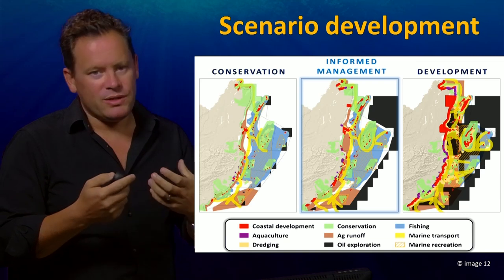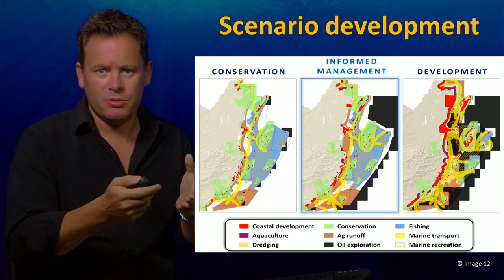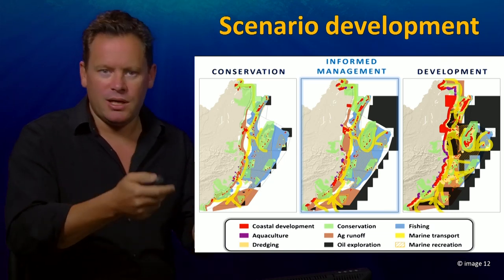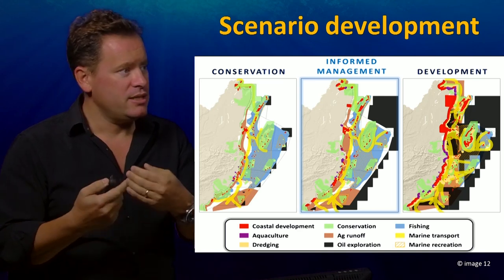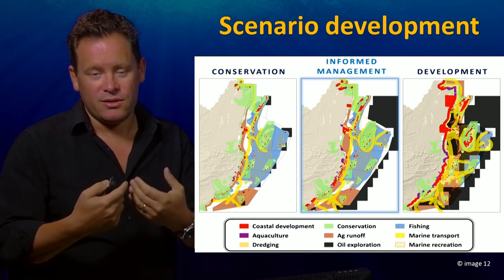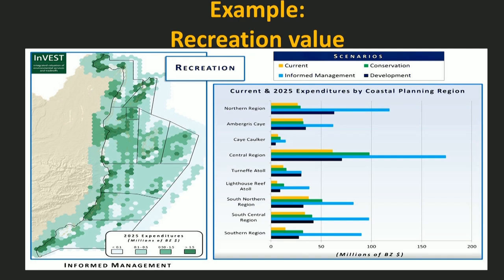You imagine what these different scenarios would look like and create maps of how they would unfold — where people would undertake certain activities, where aquaculture would be located, where tourism would be focused. The challenge is to relate these to your models and predict what that would mean for future ecosystem services. Here's an example: this is a map of Belize where those hexagons are individual cells, and the depth of the green color gives an indication of the amount of future recreational value that would occur by around 2025, assuming we followed the intermediate development scenario.